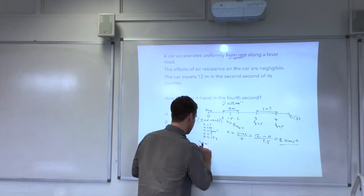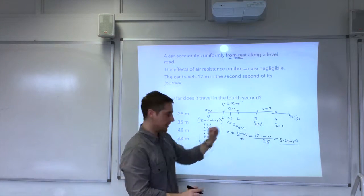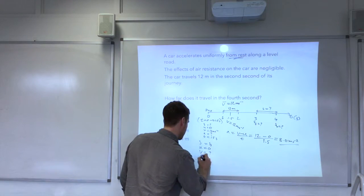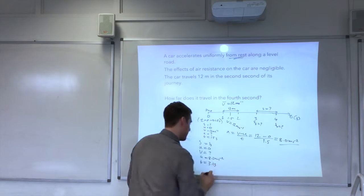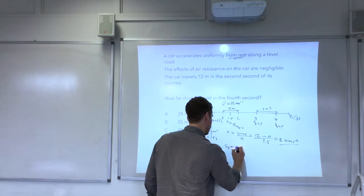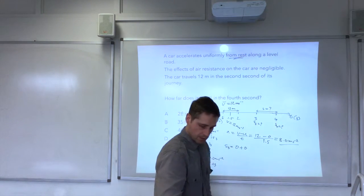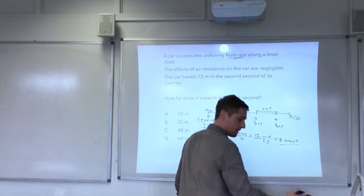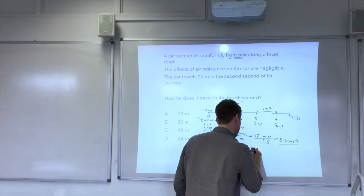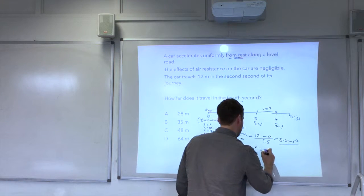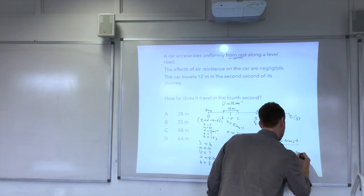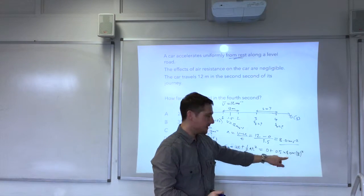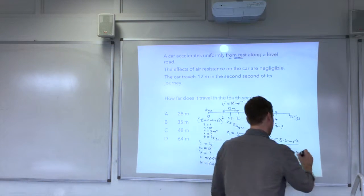I'm going to use the equation s equals ut plus a half a t squared. My data has changed. So s, u, v, a, t. S is what I'm finding. U is 0. So I'm going from 0 to 3 seconds now. V I don't know. A is 8 metres per second squared. It's constant, so that's fine. T is 3. So using that data, s3 is 0 plus a half times 8 times t squared, which is 3. So that's half times 8 is 4. 3 squared is 9, so that's 4 times 9, which is 36 metres.